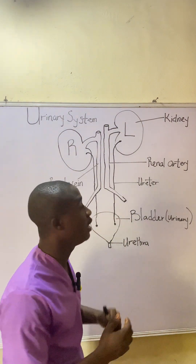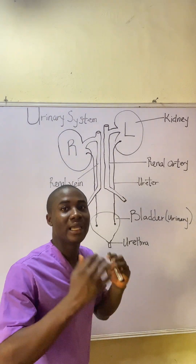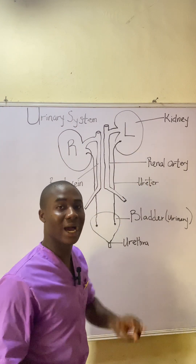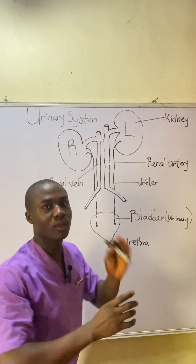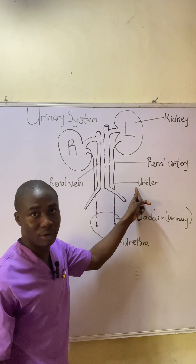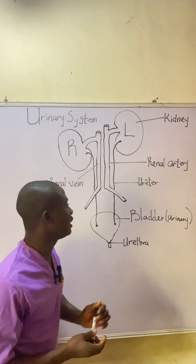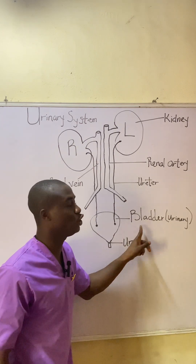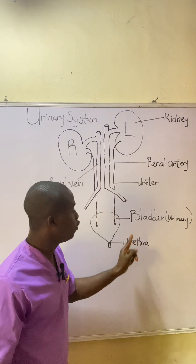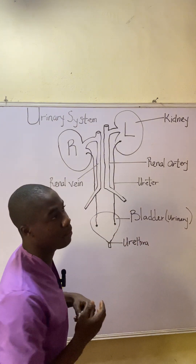First of all, it must be noted that the urinary system is made up of: first, the kidneys — in the human body we have two kidneys, as you can see. It is also made up of the ureters — we have two ureters. It is also made up of the bladder, specifically the urinary bladder, and lastly the urethra. The urethra is different from the ureter.